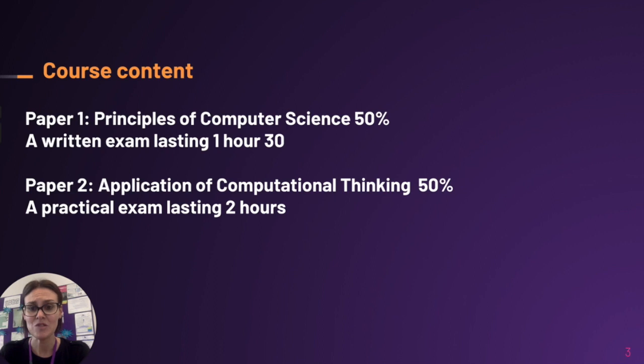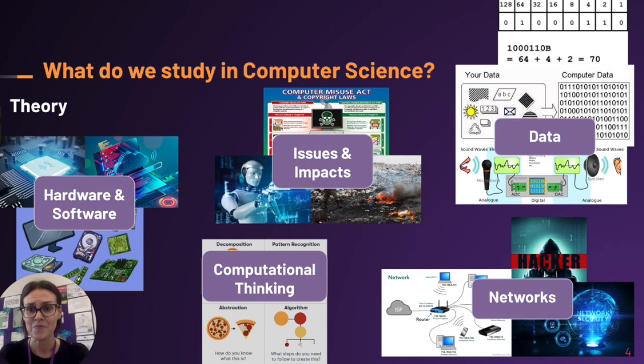both 50% each. The first one is an hour and a half, the second is two hours. The first is a written paper on the principles of computer science, and the second is a practical exam on the application of computational thinking.